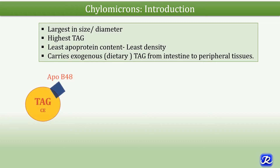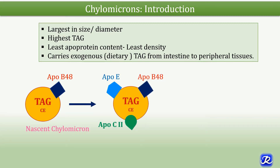Chylomicron is synthesized in the intestinal cell as nascent chylomicron. This nascent chylomicron has ApoB48 associated with it. The other apoprotein which may be associated with it is ApoA1, though it is not shown here. Triacylglycerol and cholesterol esters are packaged together along with ApoB48, forming the nascent chylomicron. In the circulation it acquires two other important apoproteins, ApoE and ApoC2, and it becomes a mature chylomicron.